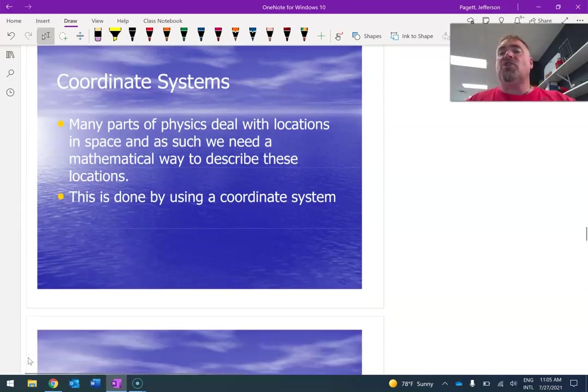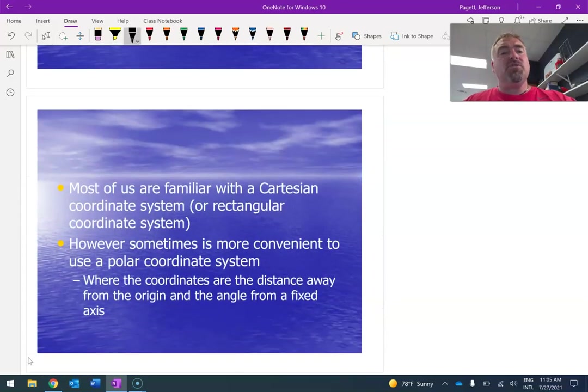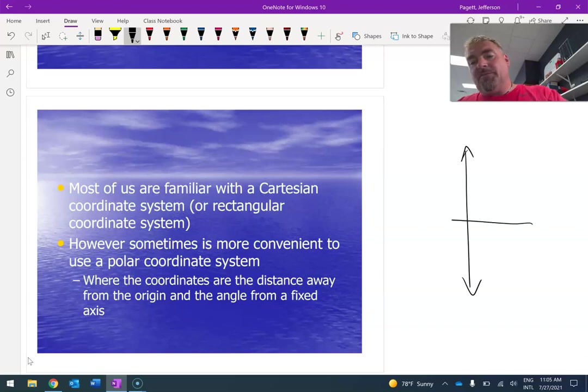In many parts of physics, we deal with locations in space. And as such, we need a mathematical way to describe these locations. And what we're going to do is we're going to use a coordinate system. So most of us are very familiar with the Cartesian coordinate plane with our X and our Y. And so as such, you can say, well, there's an object right here at this spot.